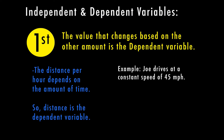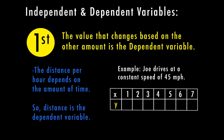For example, if Joe drives at a constant speed of 45 miles an hour, we can use that information in our table to fill out how far he goes in certain amounts of hours. We have our x values — 1, 2, 3, 4, 5 — those are our hours. And then we have our y value, which is Joe's distance.